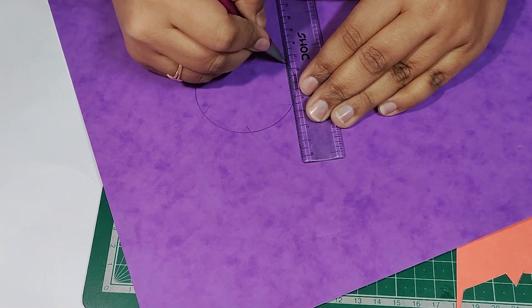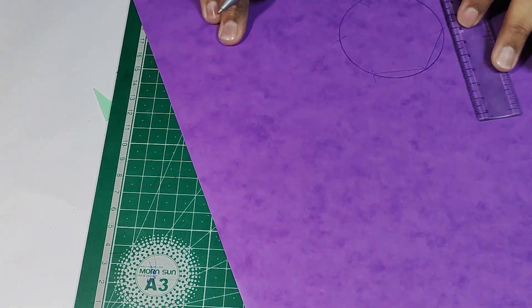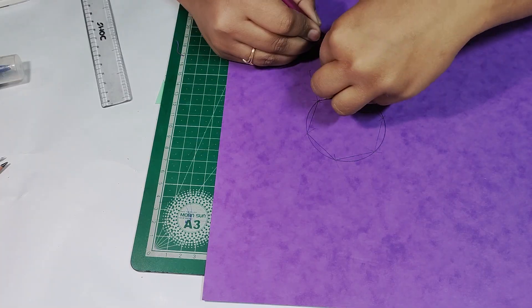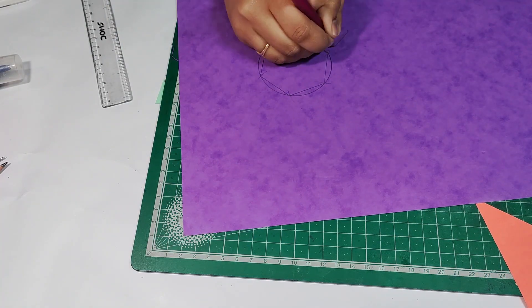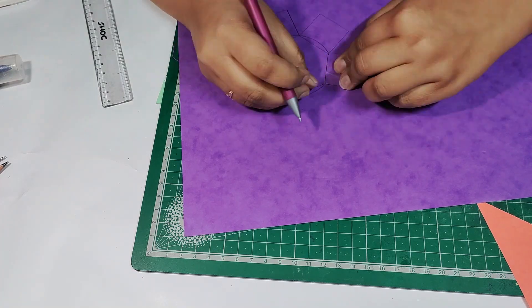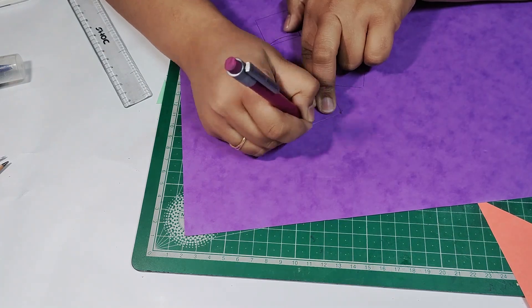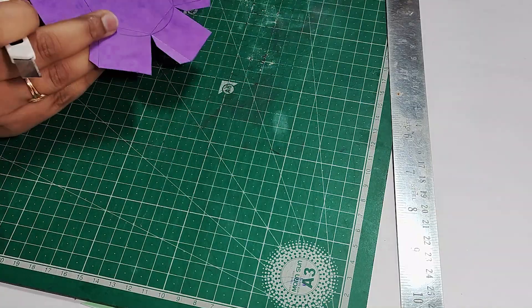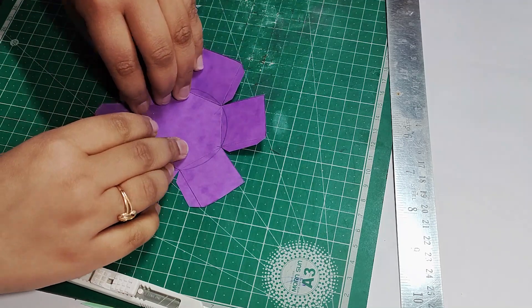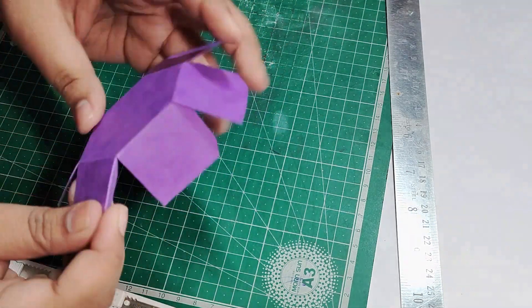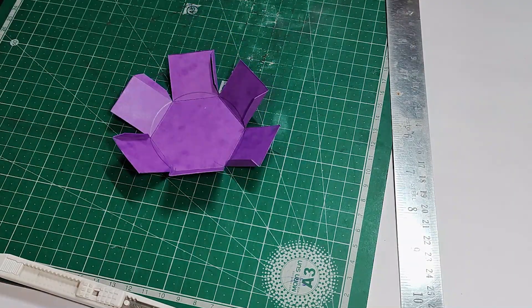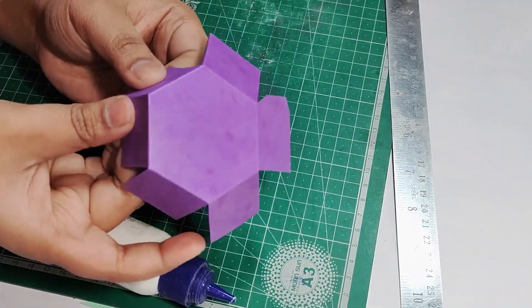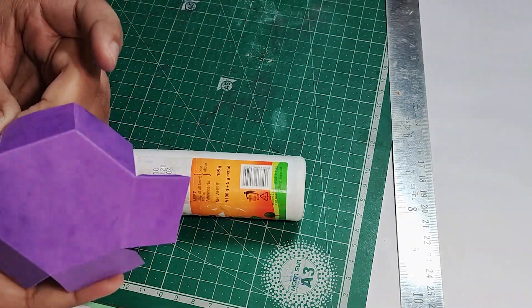We will start making a cap for our pencil box. We will make it a little bit more than 3, about 3.2. We will make a simple hexagon shape.